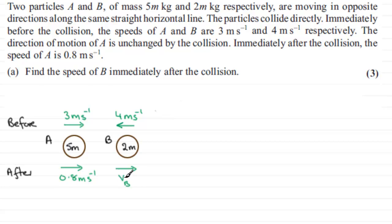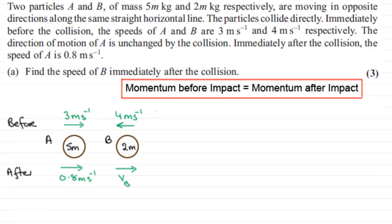To work out vB, what we need to use is the conservation of linear momentum, which is essentially that the total momentum before impact equals the total momentum after impact, providing no external forces act on the system. There are no external forces that act on the system here.